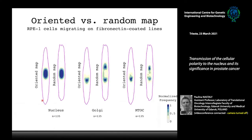To clarify the approach, here are oriented and random maps. For the nucleus, in the oriented map the Golgi is always on one side, whereas in the random map it appears on both sides. The same applies to the microtubule organizing center: in the oriented map it always faces the leading edge, whereas in the random map it appears on both sides.